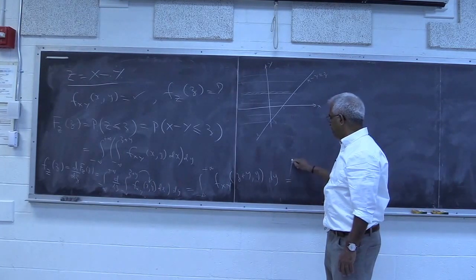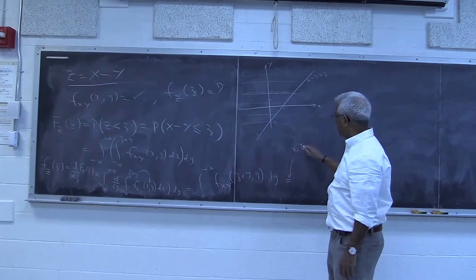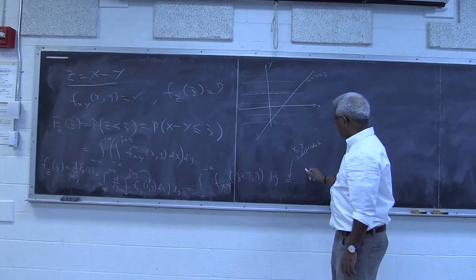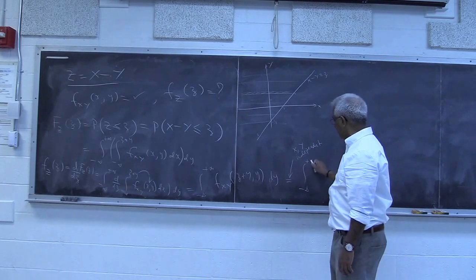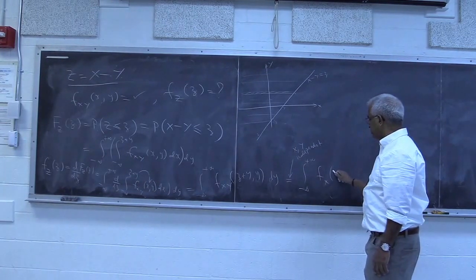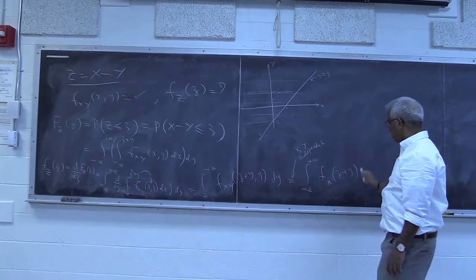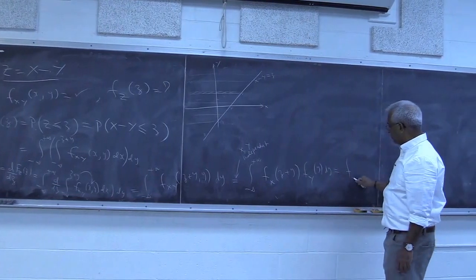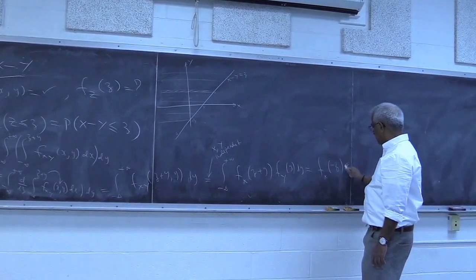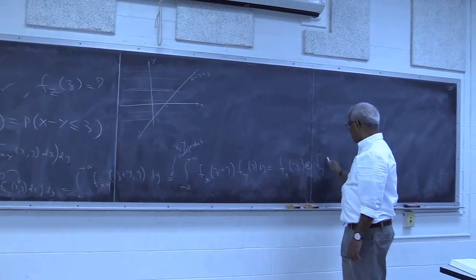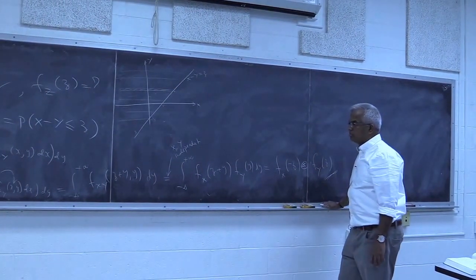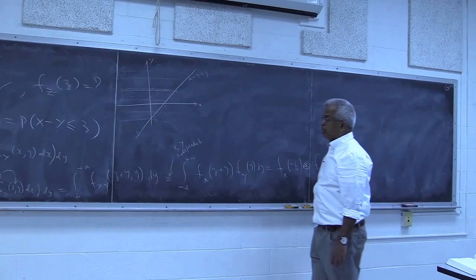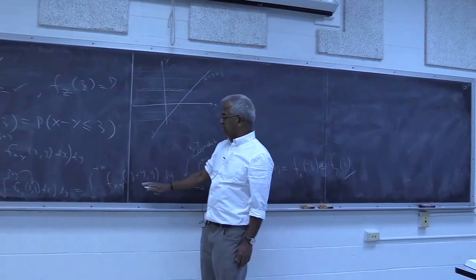If x and y are independent, this simplifies to the integral from minus infinity to plus infinity of f_X(z+y) times f_Y(y) dy. This is actually the convolution of f_X(-z) with f_Y. If they are not independent, you need to leave it at the general form with the joint density.